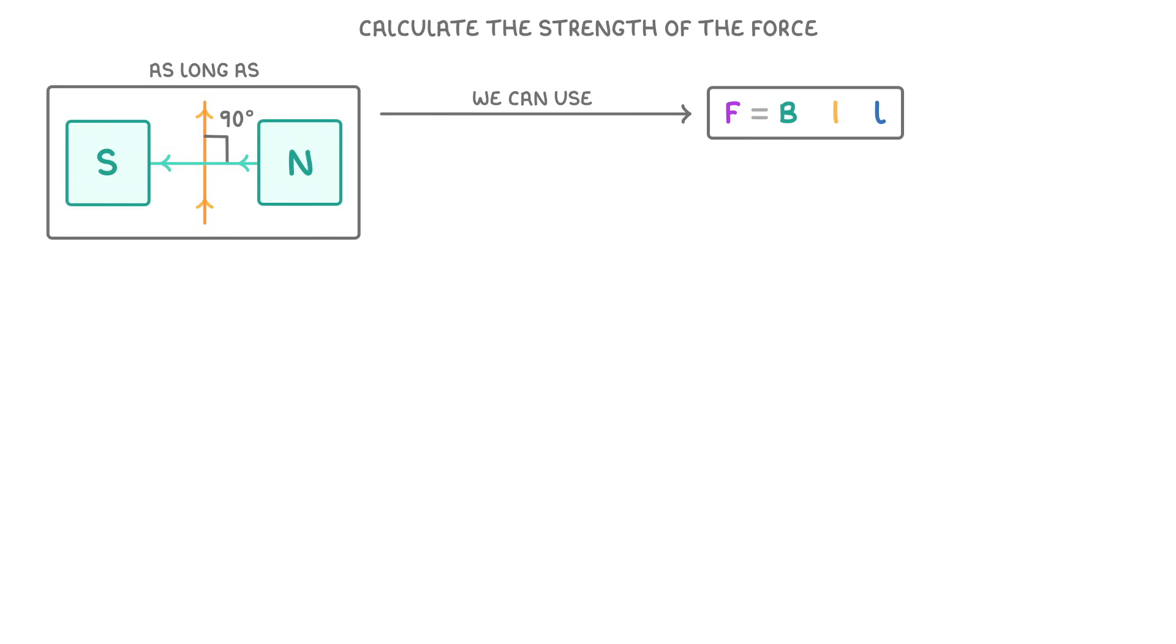F equals BIL, which stands for force, measured in newtons, is equal to the magnetic flux density, which is just a fancy term for magnetic field strength, and is measured in teslas, times current, times the length of the wire in meters.